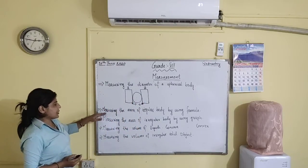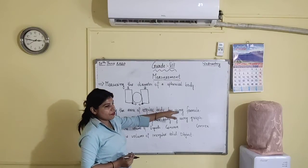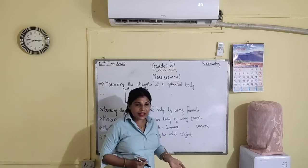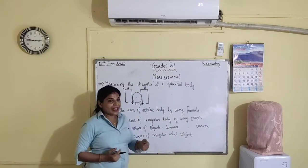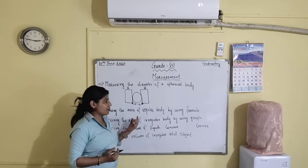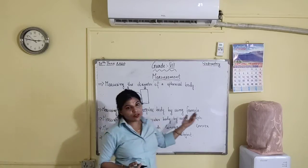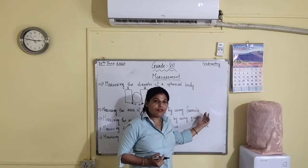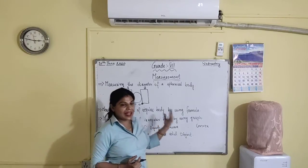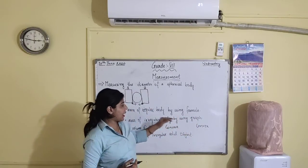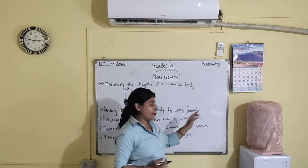Next is measuring the area of a regular body by using a formula. A regular body can be a rectangle or a square. Already in the mathematics video, I have taught you how to find the area of a square and a rectangle. The same formula you are going to use here. The area of a square is L into L, that is side into side, and the area of a rectangle is length into breadth.